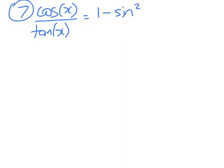Okay, next one is question number seven from delta. So we want to show that cos(x) over tan(x) is equal to 1 minus sin squared(x) over sin(x).